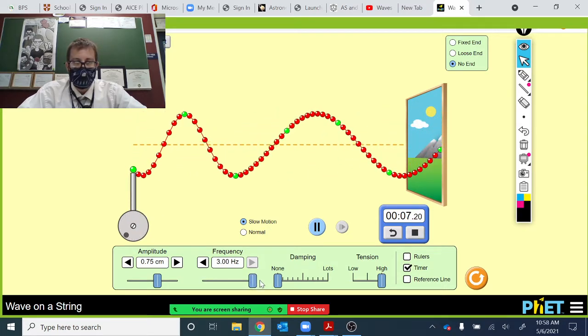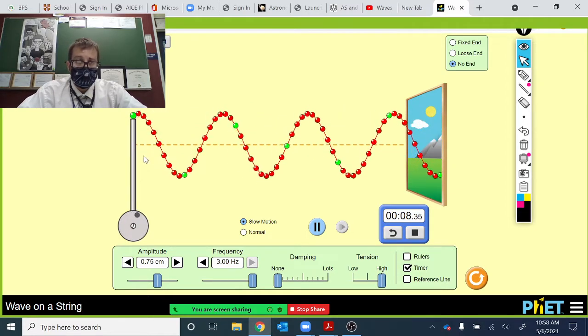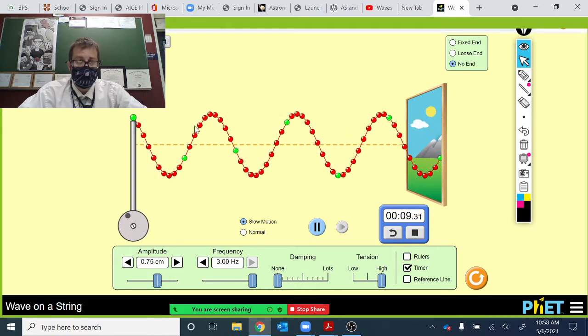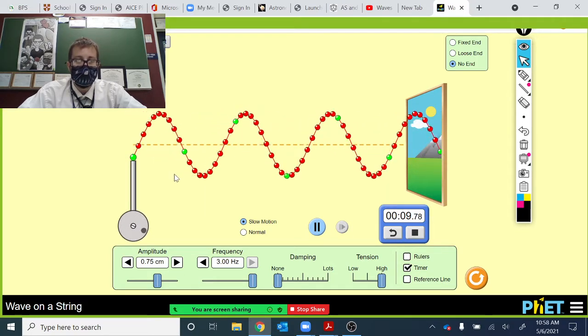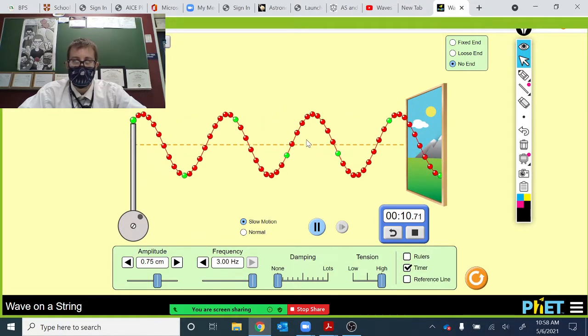If we have a higher frequency wave, again, this is in slow motion here. The wavelength is shorter. It's more frequently occurring. If we were to time it, we'd count three waves per second. Three waves oscillating in a given block of time.